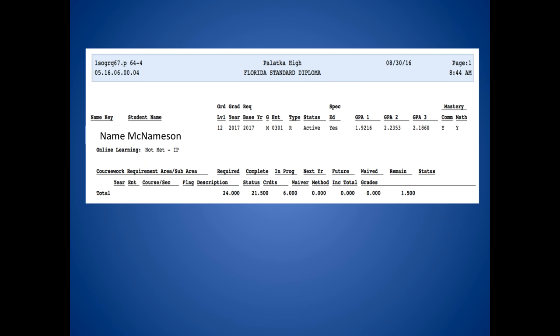If you look across the top row on your page, you will see your name, your grade level, and graduation year. If you continue to move across the line, you will see GPA 1, which is your unweighted GPA.